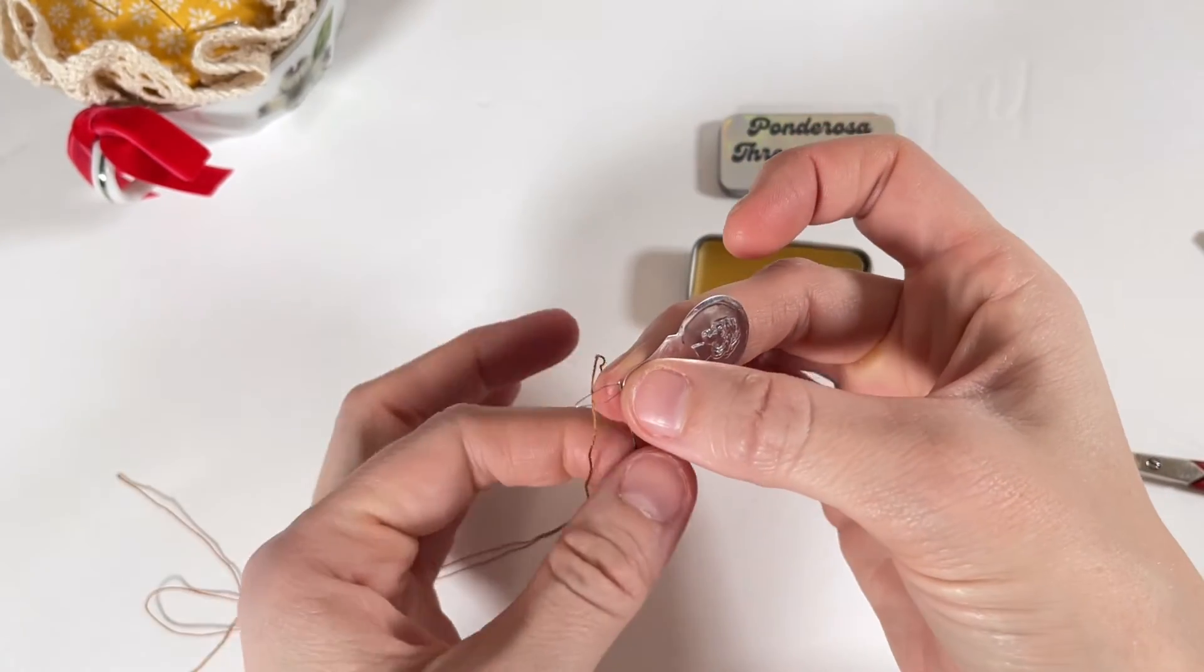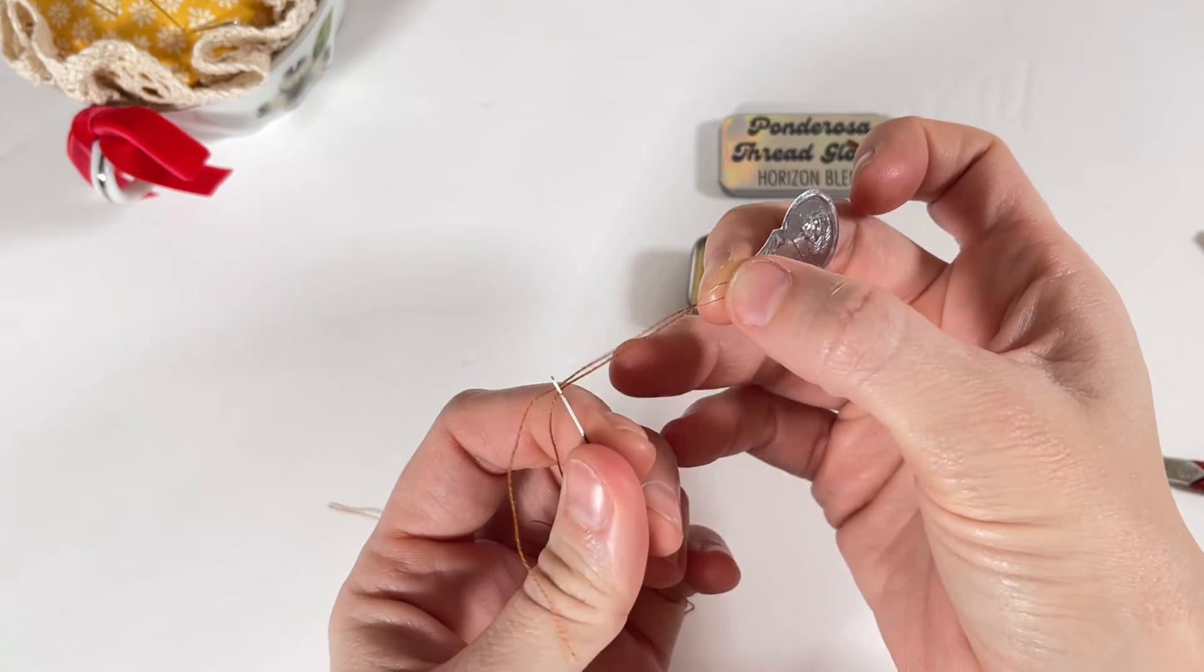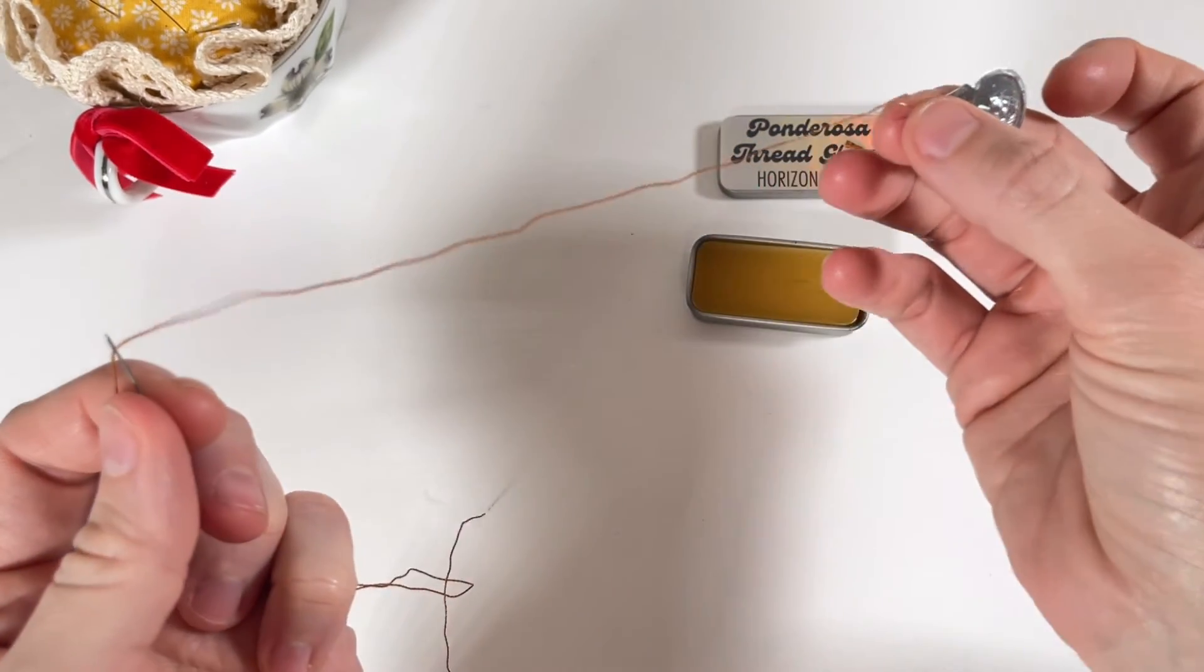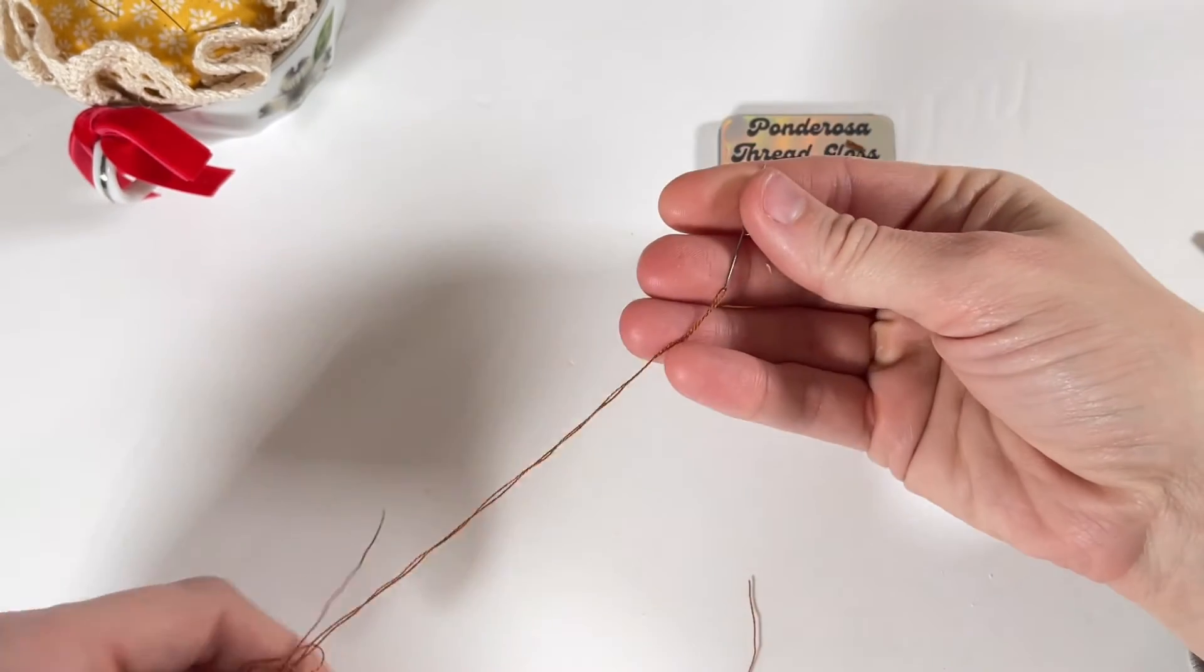Then you can pull both the thread and the needle threader through the eye of the needle and your needle should be threaded. I usually only recommend using this tool when you're using one strand of thread.